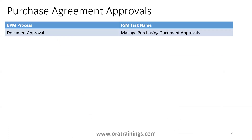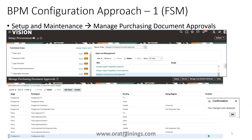Coming to the next thing — what are the options we have to configure the purchase agreement? There are two approaches. One is the FSM task, with the task name 'Manage Purchasing Document Approvals.' The other is the BPM approach, called Document Approval. Let us see the first option: Manage Purchasing Document Approval.